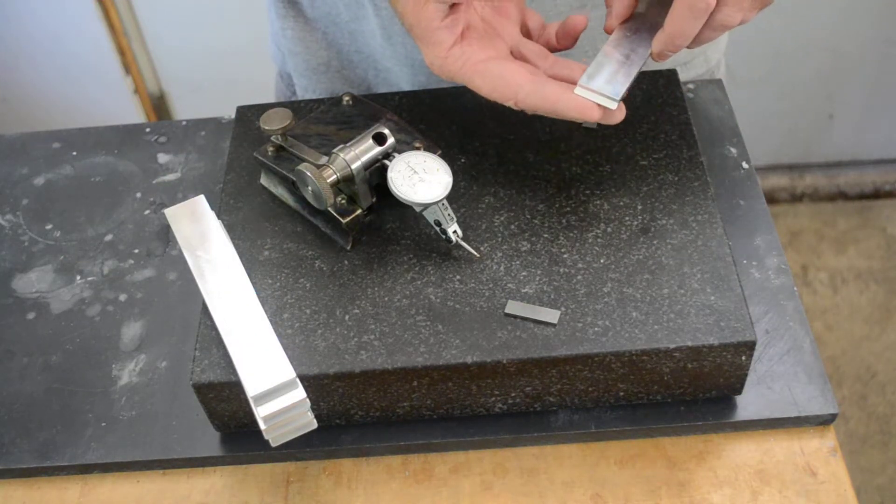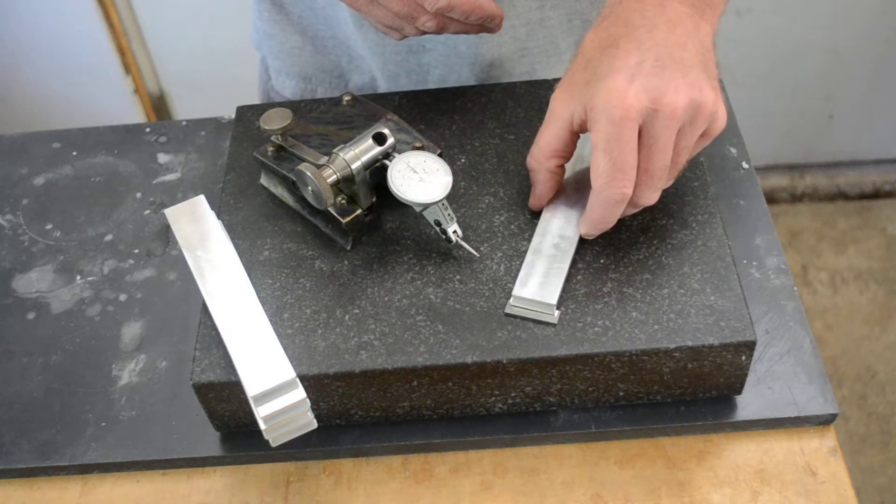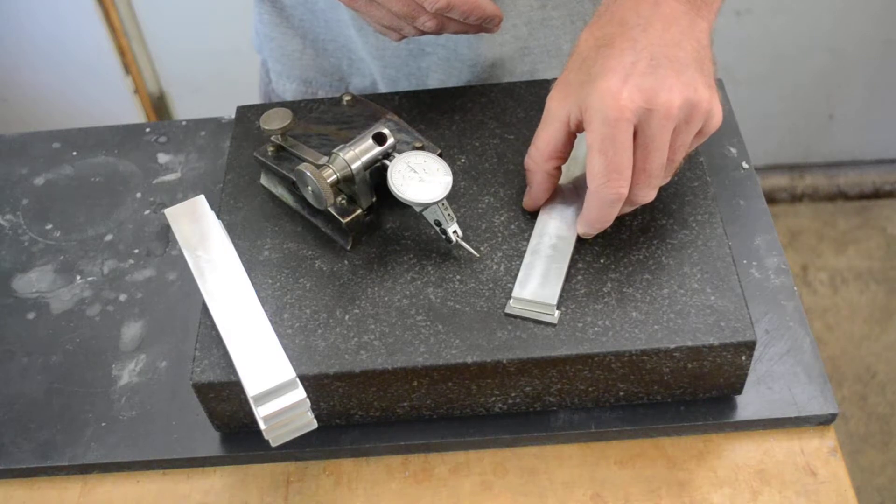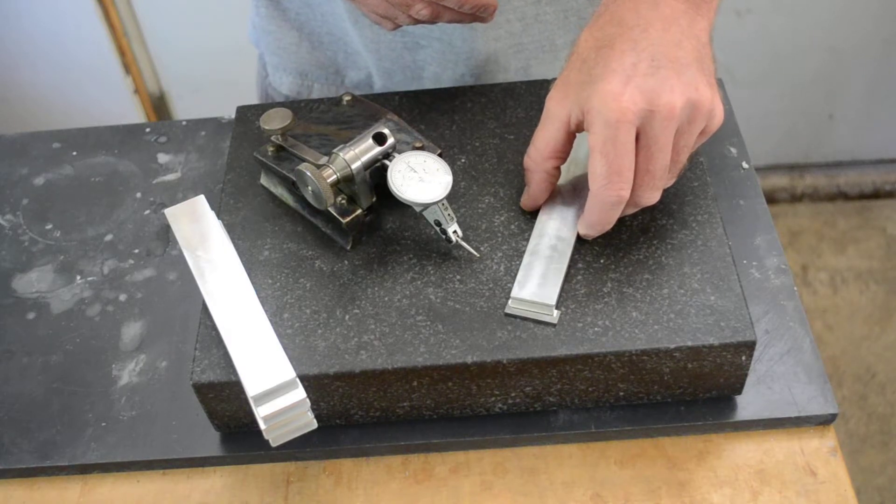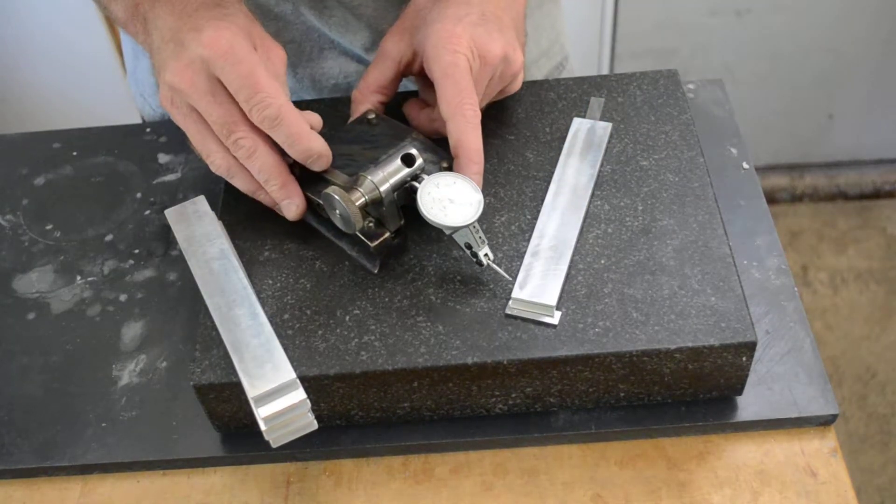One is parallel with the edge, the other is perpendicular, so that if the blank were twisted that would not show up. This is a more accurate way of holding it.